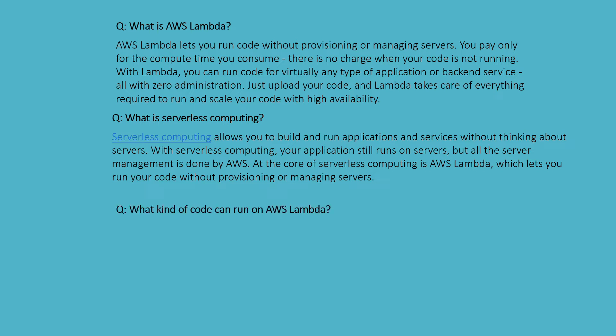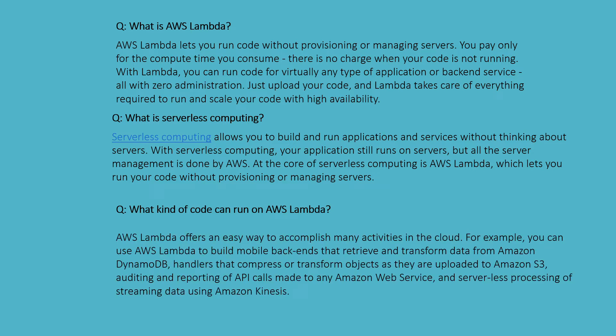What kind of code can run on AWS Lambda? AWS Lambda offers an easy way to accomplish many activities in the cloud. For example, you can use AWS Lambda to build mobile backends and retrieve and transform data from Amazon DynamoDB, handle and compress objects as they are uploaded to Amazon S3, perform auditing and reporting of API calls made to any Amazon Web Services, and do serverless processing of streaming data using Amazon Kinesis.